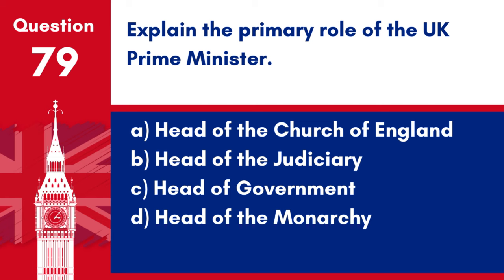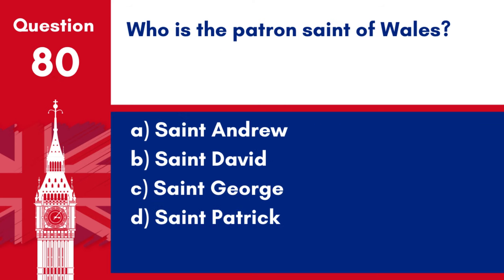Question 79. Explain the primary role of the UK Prime Minister. a. Head of the Church of England. b. Head of the Judiciary. c. Head of Government. d. Head of the Monarchy. Answer: c. Head of Government. The UK Prime Minister is the head of government, responsible for running the country and leading the executive branch.